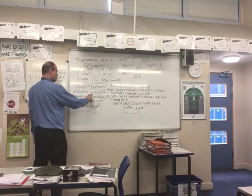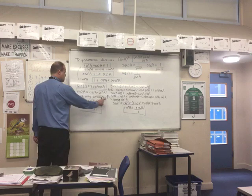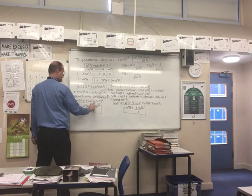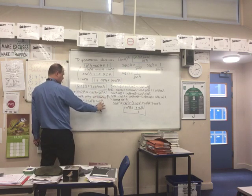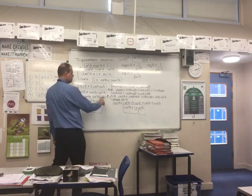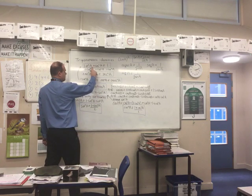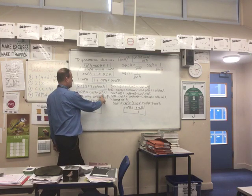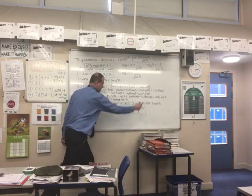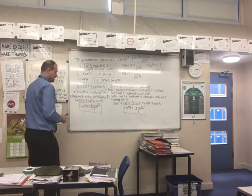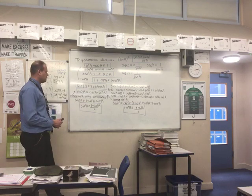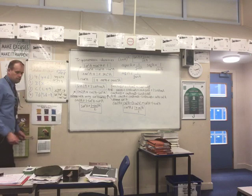To integrate sin² or cos², rearrange the cos2A identity. Replacing cos²A using sin²+cos²=1 gives cos2A = 1 − 2sin²A, so sin²A = (1 − cos2A)/2. Similarly, cos²A = (1 + cos2A)/2. These are the key results: sine has the minus in the middle, cosine has the plus.